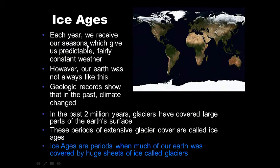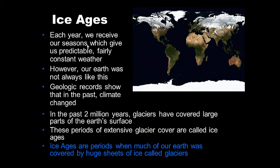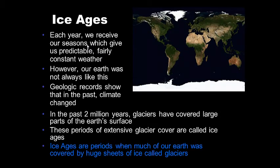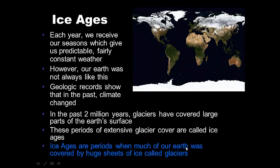Ice ages. Each year we receive our seasons, which give us predictable, pretty constant weather. However, our Earth was not always like this. Geologic records show that in the past, climates have changed. In the past two million years, glaciers have covered large parts of Earth's surface. These periods of extensive glacial coverage are called ice ages — periods when much of Earth was covered by massive sheets of ice called glaciers.